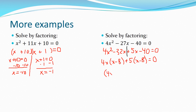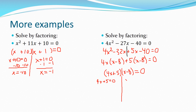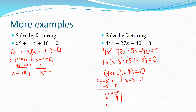So now I have the quantity 4x plus 5 times the quantity x minus 8 equals zero. I split, set, and solve. It's okay to get a fractional answer: 4x equals negative 5, divide by 4, so x equals negative five-fourths. For x minus 8 equals zero, I add 8 to both sides and x equals 8. Those are my two solutions for x in that equation.